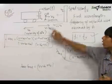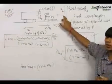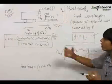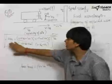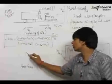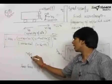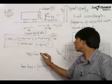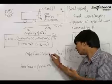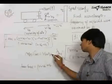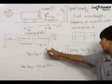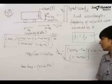The key takeaway: whenever finding the wavelength observed by the observer, write the equation from the source's perspective. When finding the frequency observed, always use the formula lambda observed × F observed = velocity of sound with respect to that observer. These two rules give us our final answers.